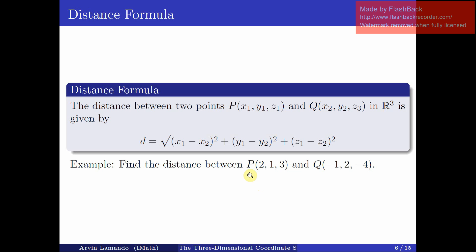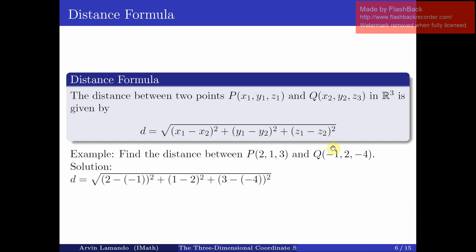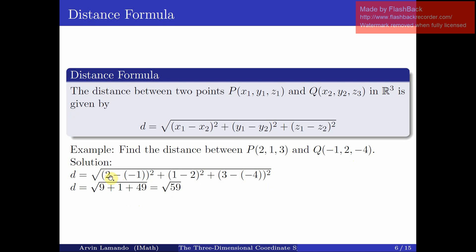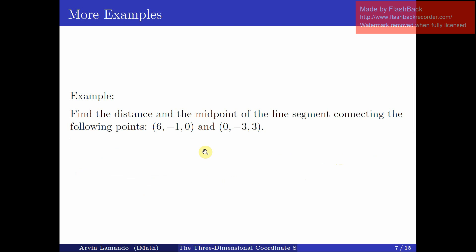Let's see this in action. To find the distance between P=(2,1,3) and Q=(-1,2,-4), we plug the numbers into the formula. The distance is the square root of (2-(-1))² + (1-2)² + (3-(-4))², which evaluates to √(9 + 1 + 49) = √59. So the distance between them is √59.